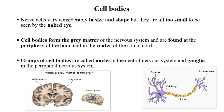The nervous system is divided into white matter and grey matter. The cell bodies of neurons form the grey matter of the brain, found on the periphery of the brain and the center of the spinal cord. The group of cell bodies is called nuclei in the central nervous system, while in the peripheral nervous system they are called ganglia.